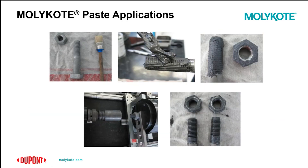In conclusion, paste can be used for a number of applications, including thread and fastener applications as an anti-seize agent and for assembly and dynamic applications. Molycote pastes are formulated specifically for high-performance applications and can withstand harsh environments. These pastes work by creating and maintaining a lubricating layer despite extreme loads and temperatures.